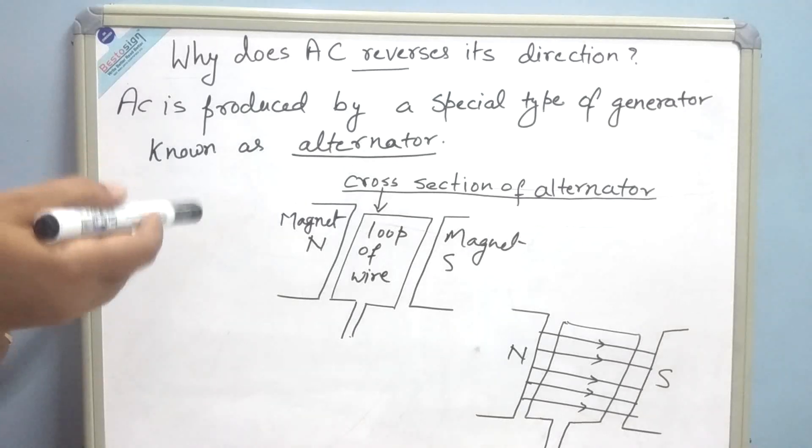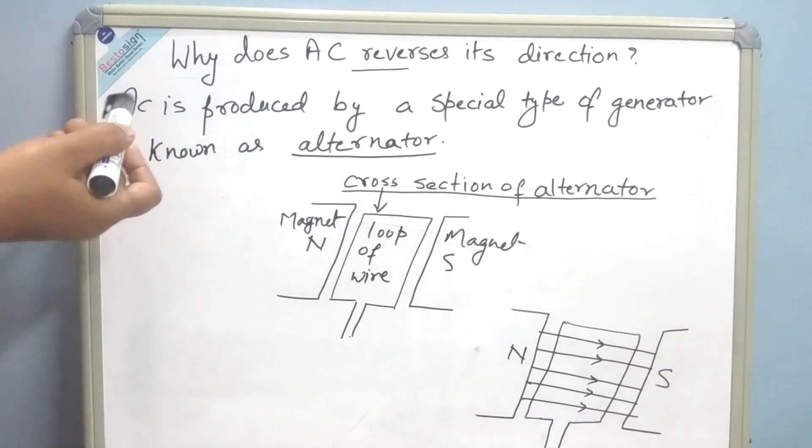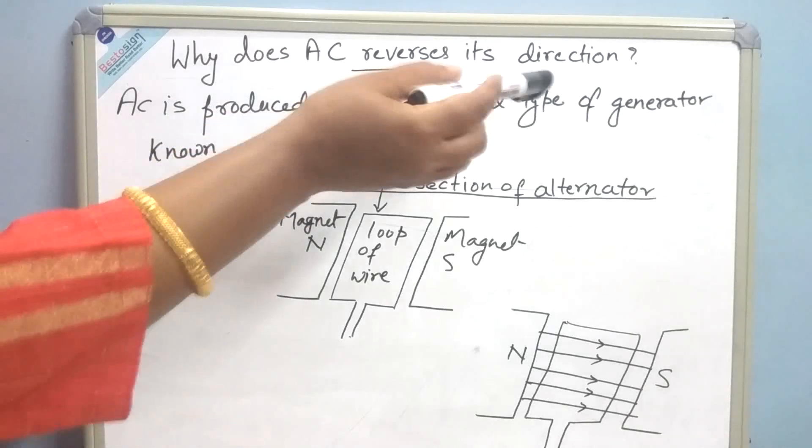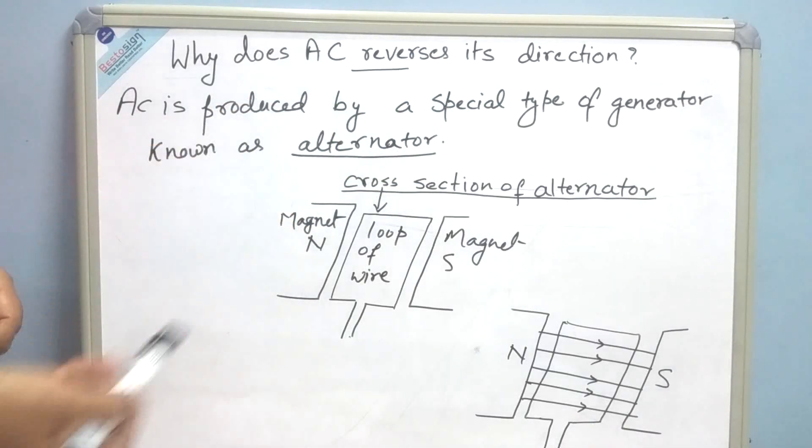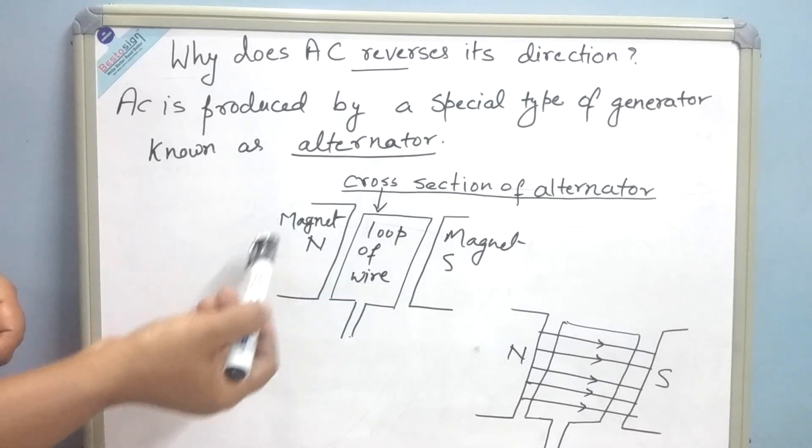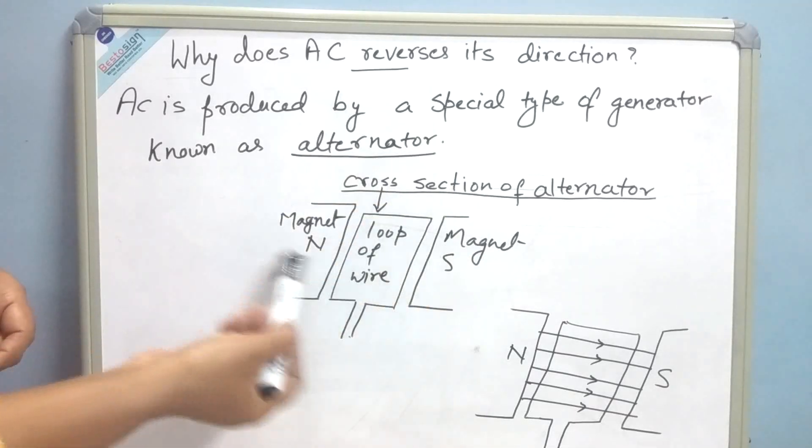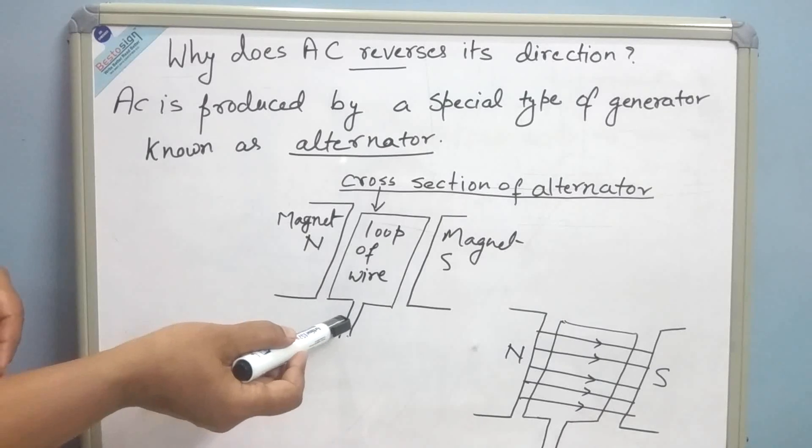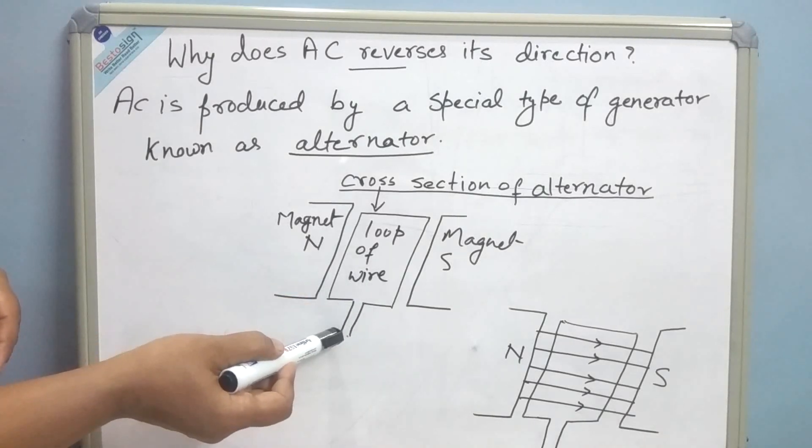To understand that, we have to go in detail about how AC is produced. AC is produced by a special type of generator known as alternator. This is a cross section of alternator. In the alternator, loop of wire is surrounded by a magnet, by a very large magnet.